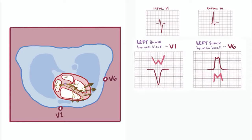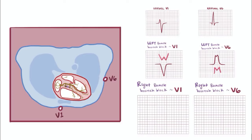Now let's say that there's a block on the right bundle branch. The first part is actually similar to the normal situation. So the septum depolarizes from the left bundle branch toward the right ventricle, so toward and positive in V1 and away and negative in V6.